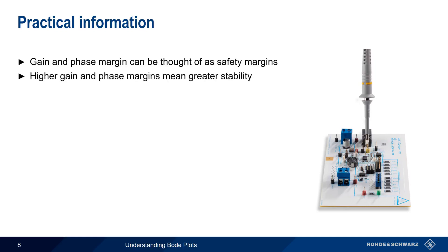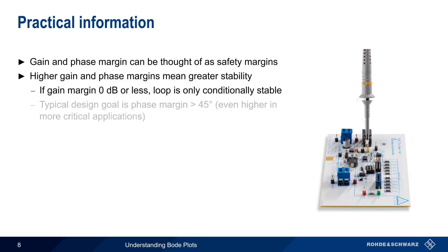In the case of gain margin, we might be able to get by with a margin of 0, or even less. But in this case, the loop would only be conditionally stable, and could easily become unstable if gain changed. When it comes to phase margin, a typical goal is to have at least 45 degrees of phase margin, and even higher values might be desirable in more critical applications.